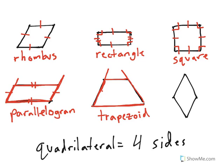The last shape that we have is what we call a kite — sometimes people call it a diamond. I like to identify a kite by drawing a line from the top to the bottom, and then a line from left to right. Does it form four right angles in the middle? If you can say yes, then it's a kite.